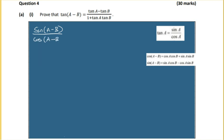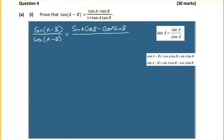This sets things up nicely because we can now use the expansion identities. The numerator sin(a - b) = sin(a)cos(b) - cos(a)sin(b), and the denominator cos(a - b) = cos(a)cos(b) + sin(a)sin(b).